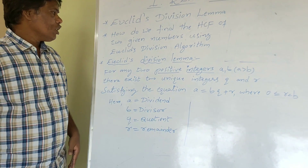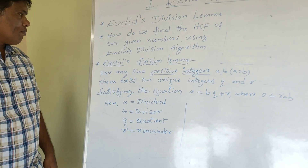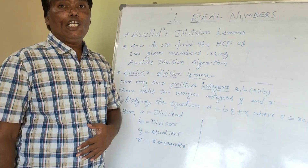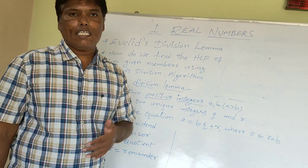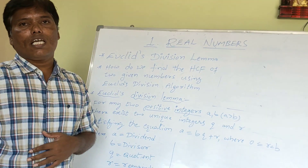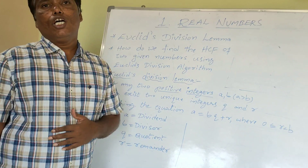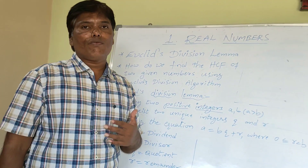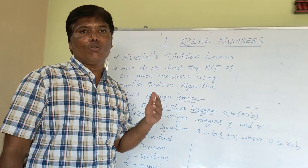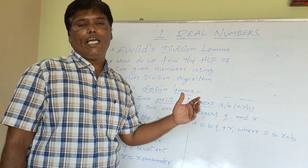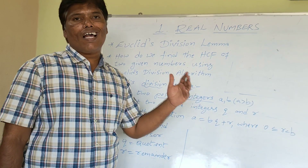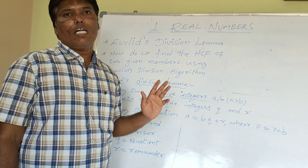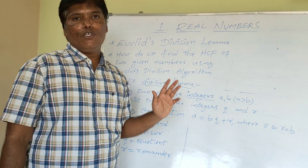Let us see the statement of Euclid's Division Lemma. For any two positive integers a and b, there exist two unique integers q and r, satisfying the equation a is equal to b into q plus r, where 0 is less than or equal to r, which is less than b. This statement is called Euclid's Division Lemma.